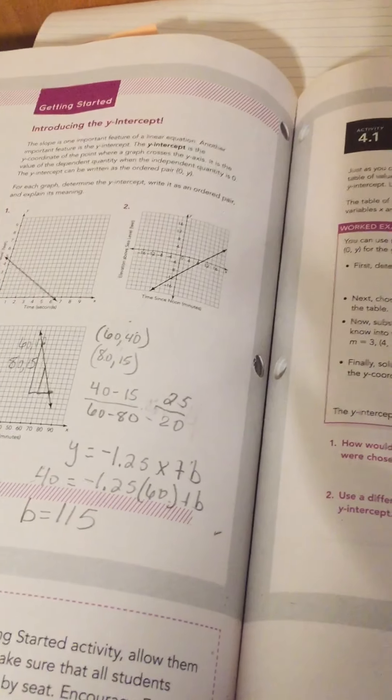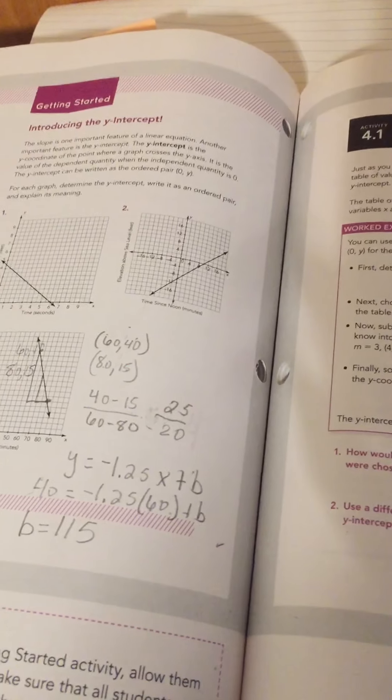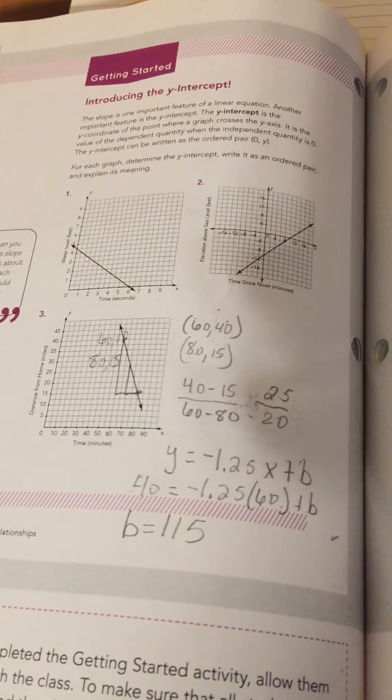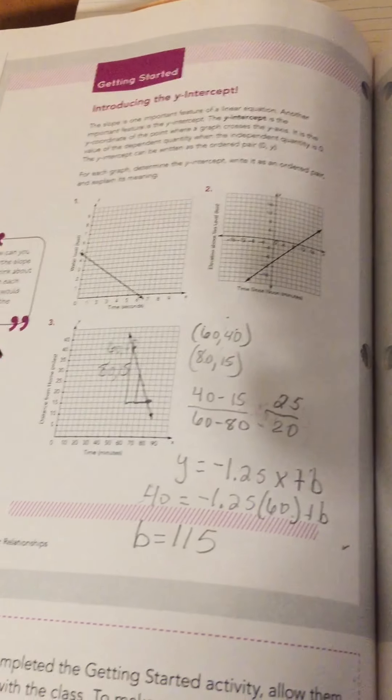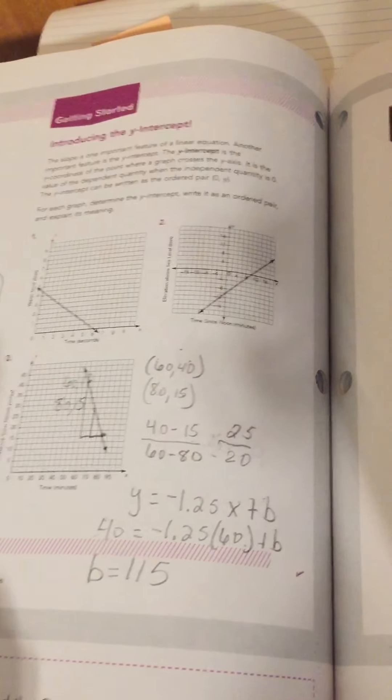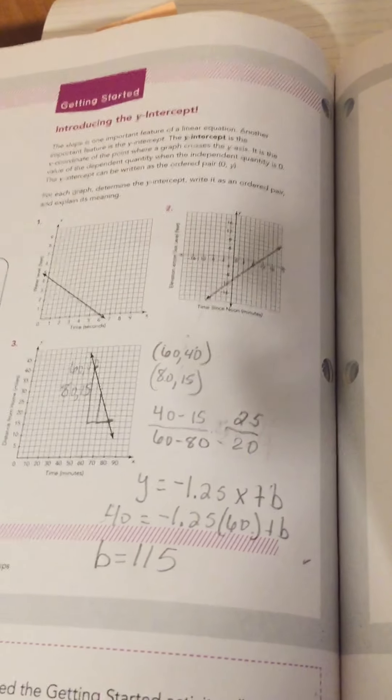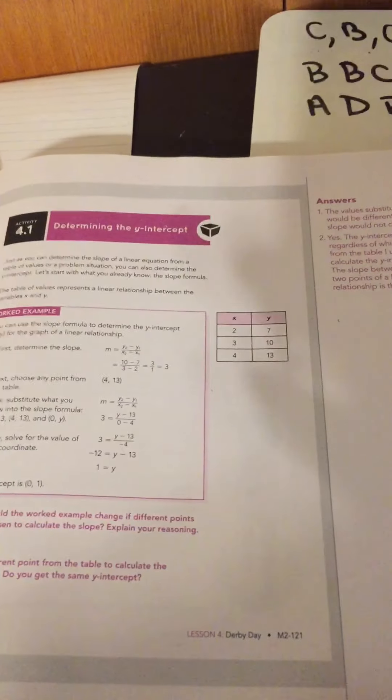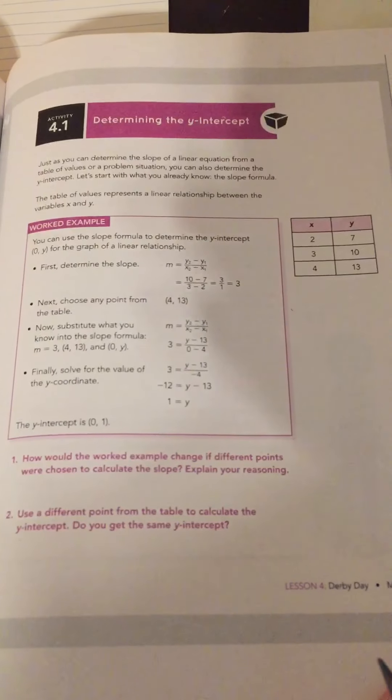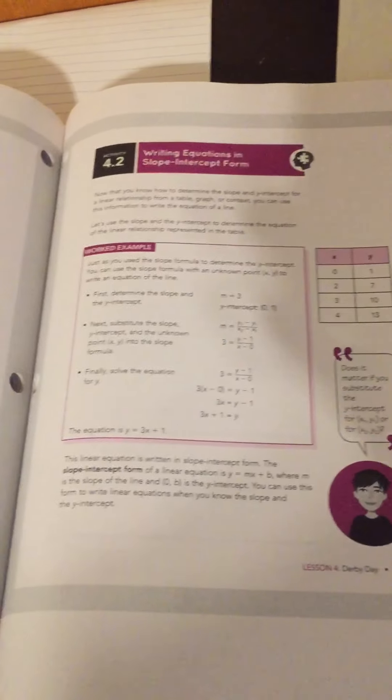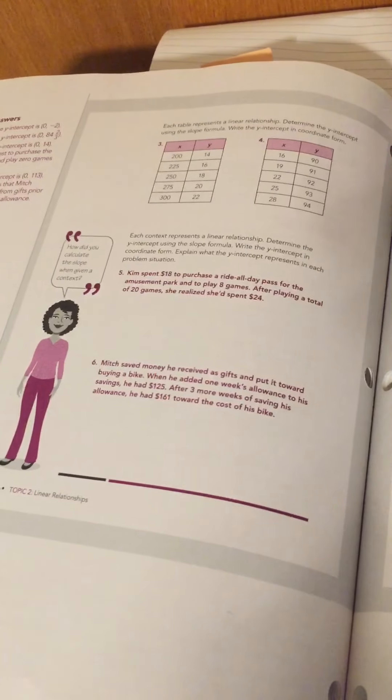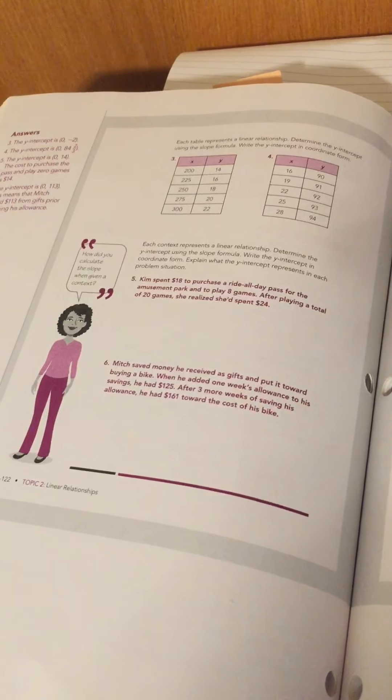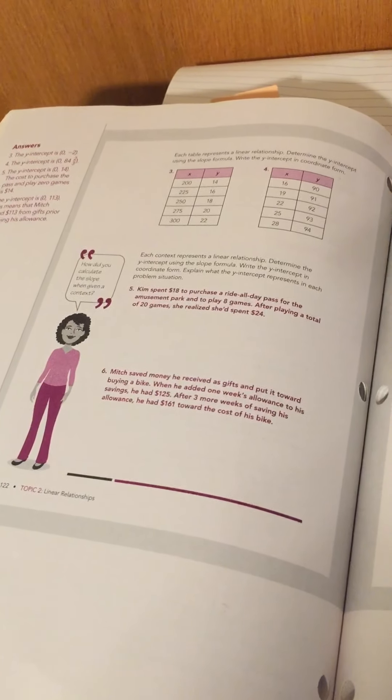So, what you could also have done is worked your way backwards once you found the slope. So, you know that every time you're going down 1.25, you could work your way back from the closest point. But that would be a lot of work considering these are such large numbers. So, I would like you guys to use what we just discussed here and this worked example on this page to complete 4.1. That's all you have to do for today. Definitely make sure you submit your work to me and let me know if you have any questions. Bye!